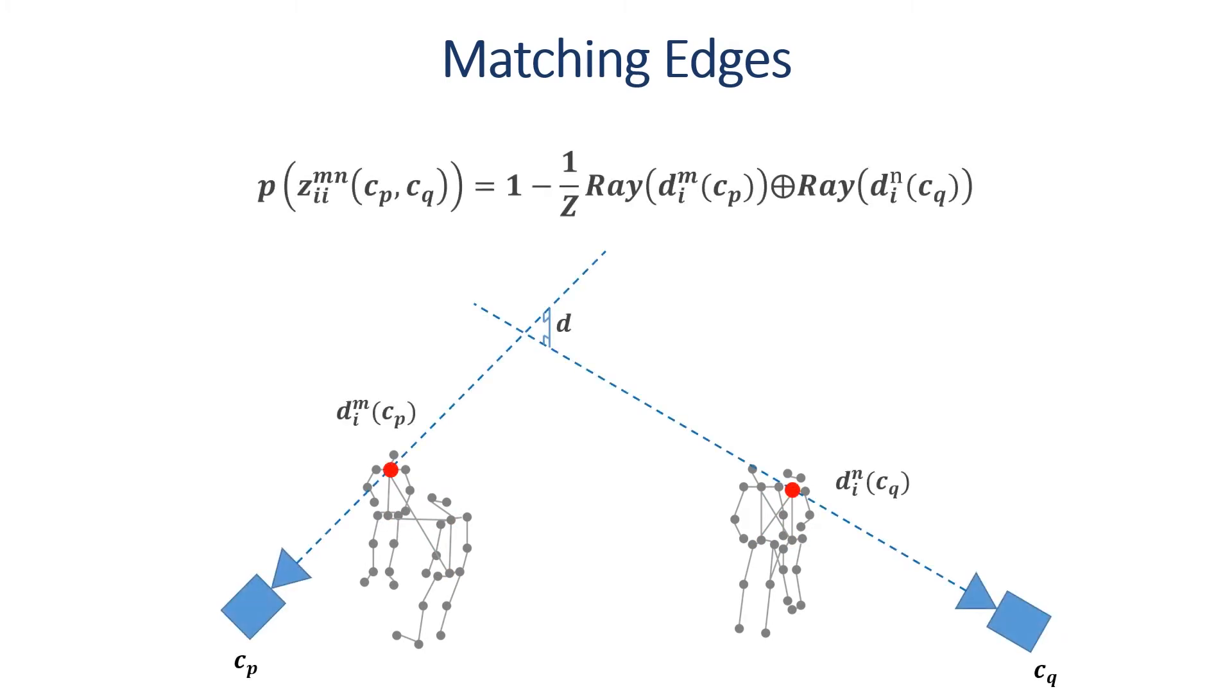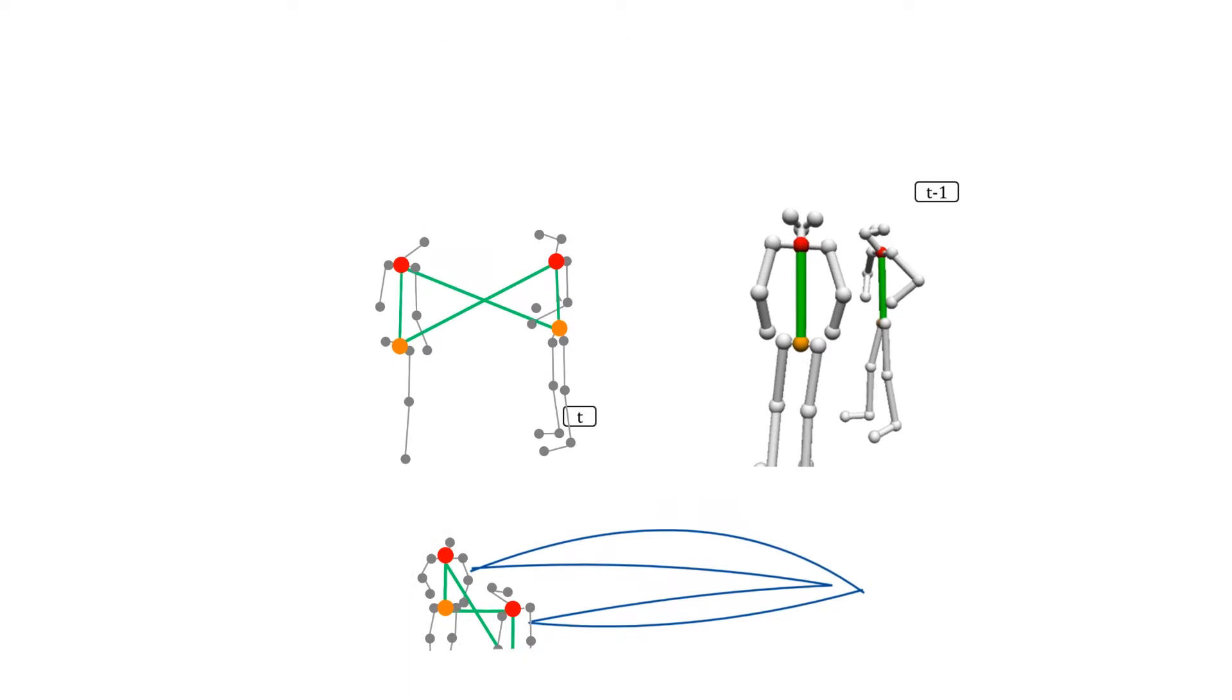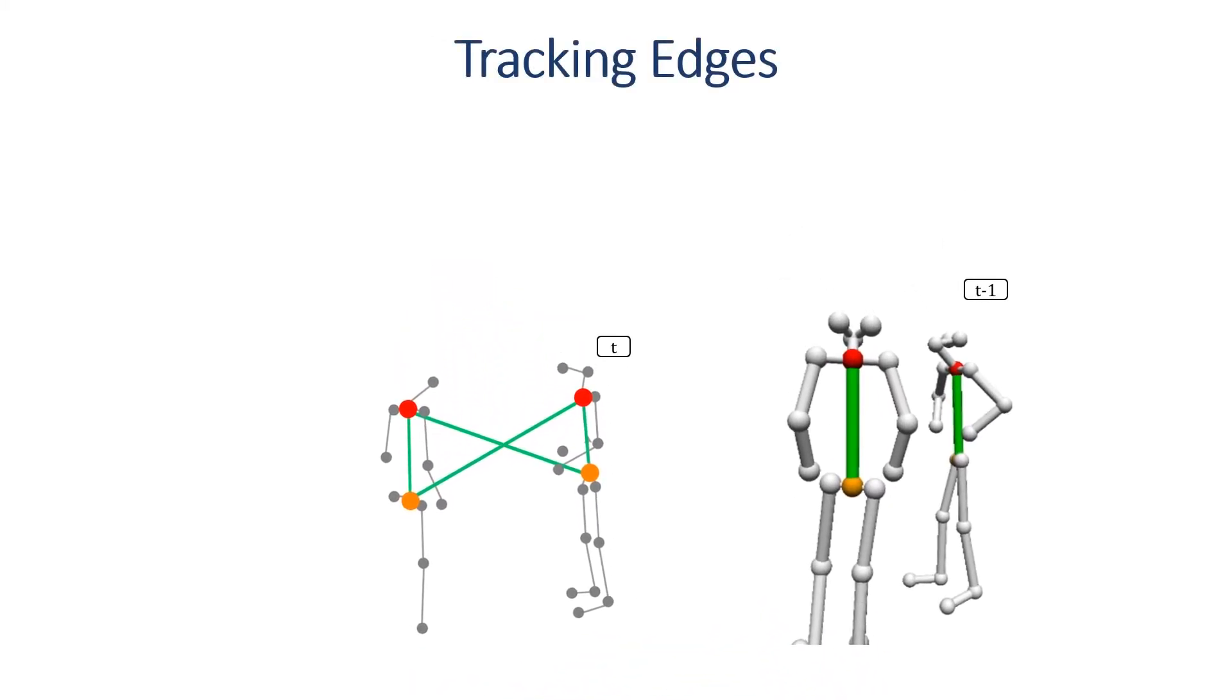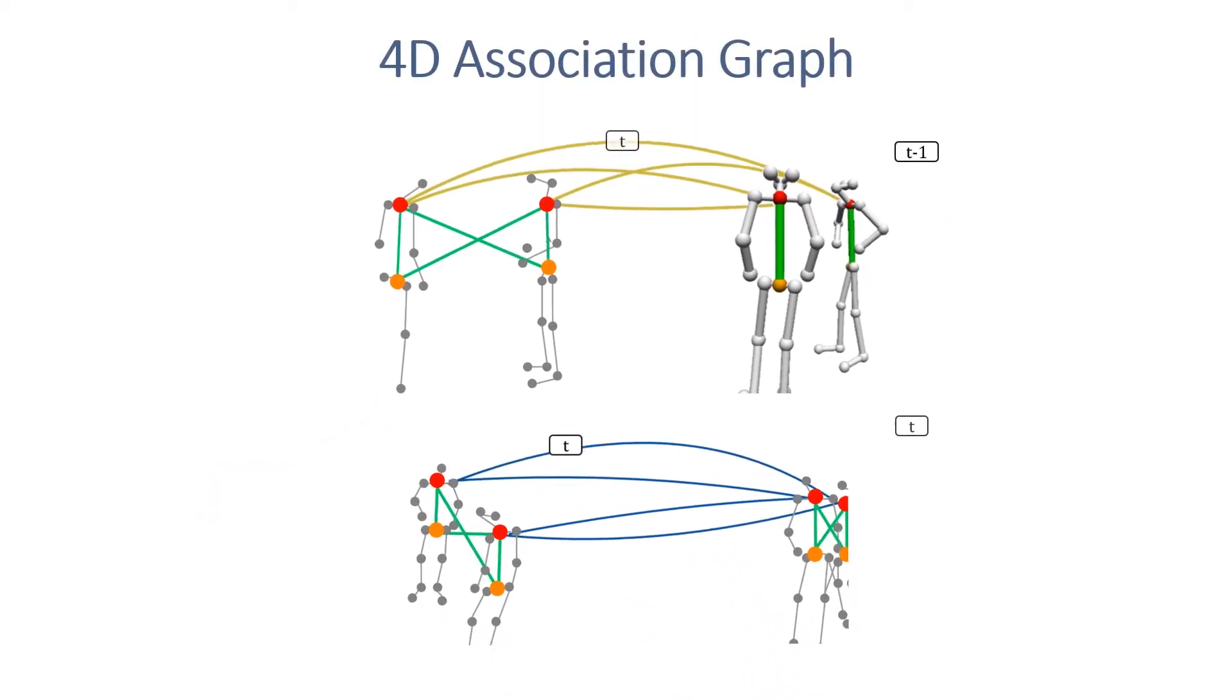Cross-view matching edges connect the same body parts across views. The weight is defined based on the epipolar distance, written as line-to-line distance between two rays emitting from the camera centers to the 2D joint locations. We take the reconstructed skeletons at the former frame for regularization of the association problem. Temporal edge is defined as point-to-line distance between 3D joint position last frame and spatial line emitting from camera center to 2D joint location.